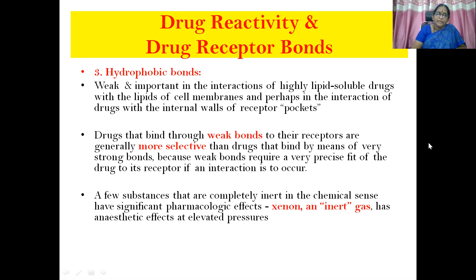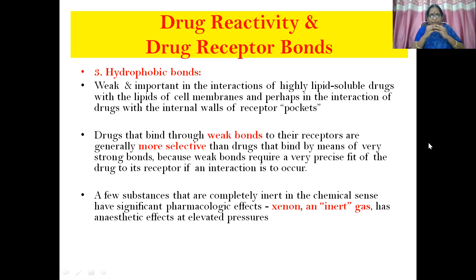Drugs that bind through weak bonds to their receptors are generally more selective than drugs that bind by means of very strong bonds. The reason is that weak bonds require a very precise fit of the drug to a receptor molecule for an interaction to occur. So weak bonds are more selective, and for proper selectivity, the minimum molecular weight has to be 100 daltons. A few substances that are completely inert in the chemical sense also have significant pharmacological effects — for example, xenon, an inert gas, has anesthetic effects at elevated pressures.